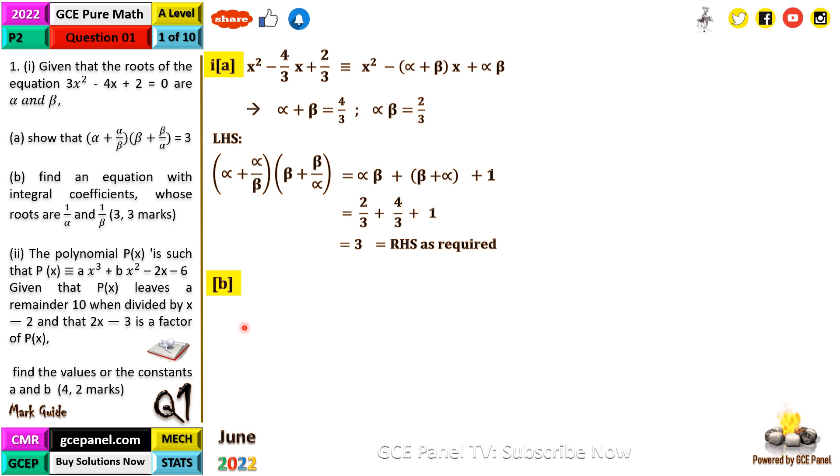Our new sum will be 1/α + 1/β, which equals (α + β)/αβ. Since α + β = 4/3 and αβ = 2/3, when we divide we get 2. Therefore, our new sum is 2.